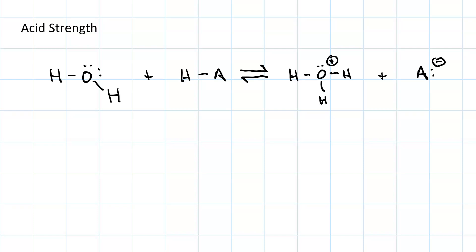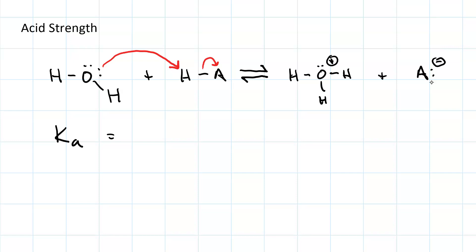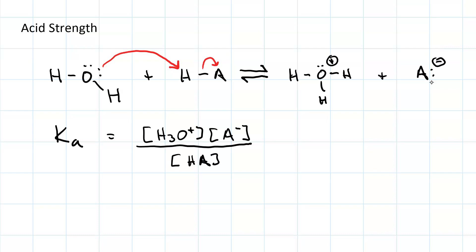Acid strength is measured as the tendency of the acid to donate its proton to water. So for an acid put in water, if it's a strong acid, water will attack its proton, this bond will break and turn into a lone pair, and you end up with hydronium — the conjugate acid of water — and whatever anion is left, which is the conjugate base of your acid. The equilibrium constant for this reaction is Ka, equal to the concentration of hydronium times the concentration of the anion over the concentration of unionized acid. We leave water out because it's the solvent.